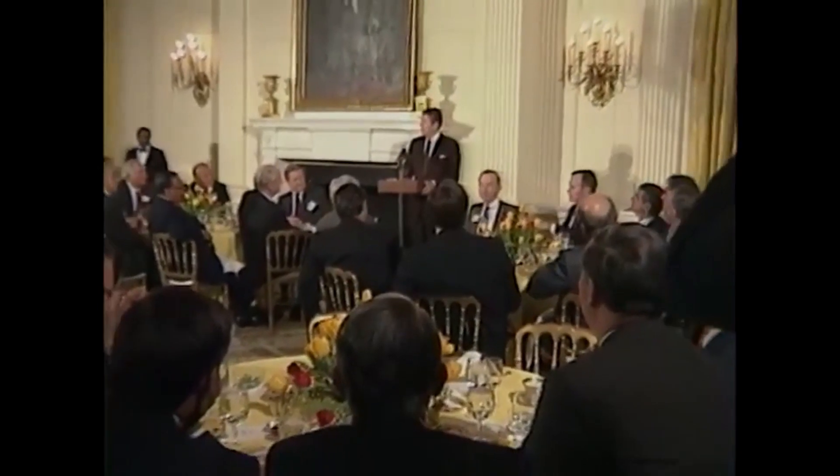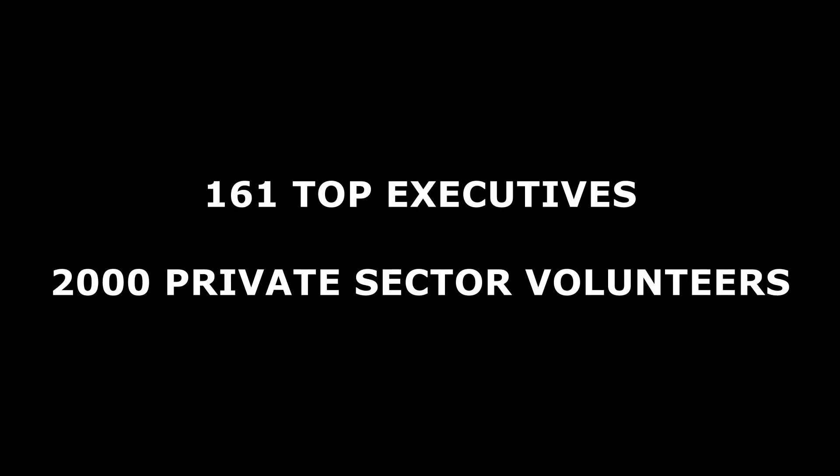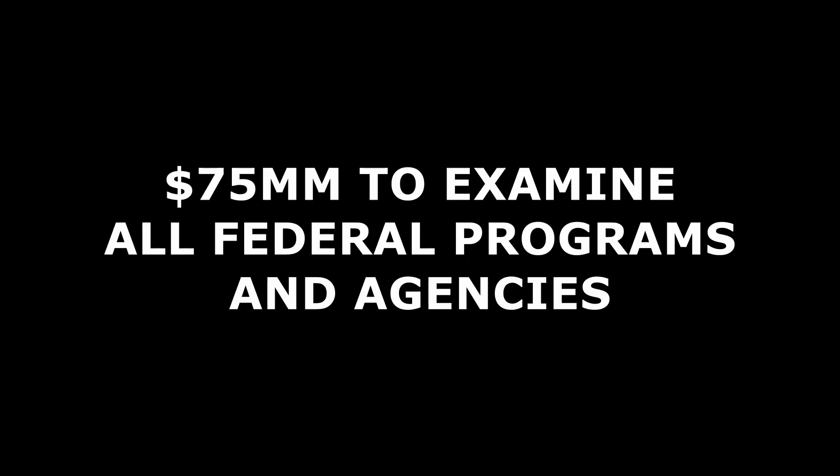Reagan said: "Be bold. We want your team to work like tireless bloodhounds. Don't leave any stone unturned in your search to root out inefficiency." Members of his team included 161 top executives, assisted by 2,000 volunteers from the private sector. They contributed more than $75 million worth of their time and resources to examine all major federal programs and agencies.